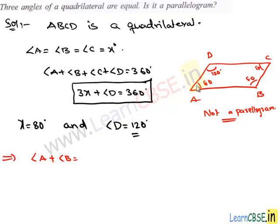It is because if we consider the sum of any two adjacent angles, let angle A and angle B, their sum is equal to 160 degrees. From the properties of parallelogram, the sum of adjacent angles is 180 degrees.